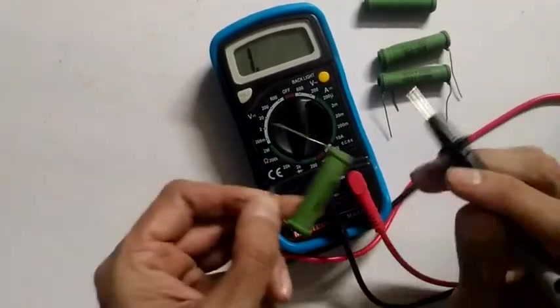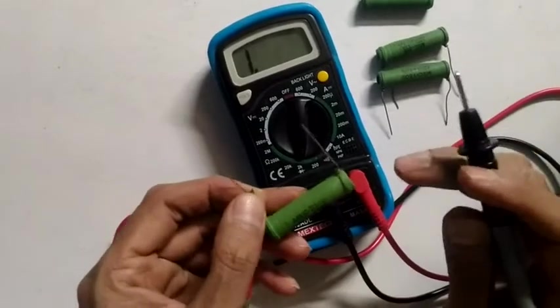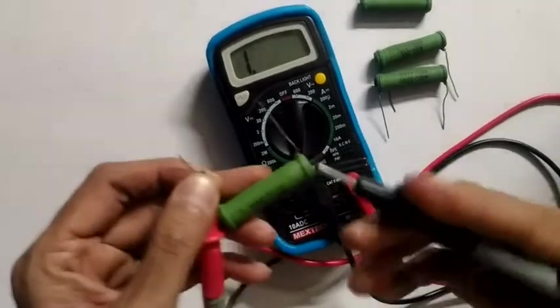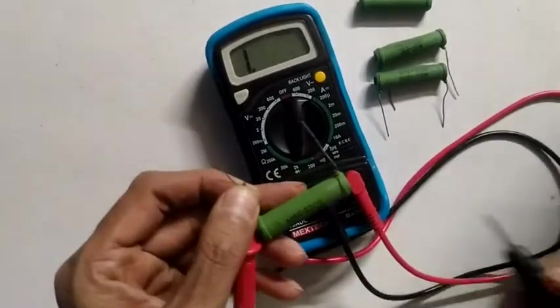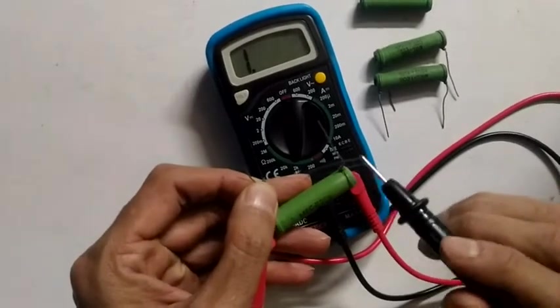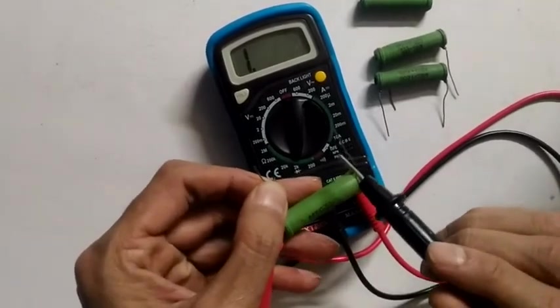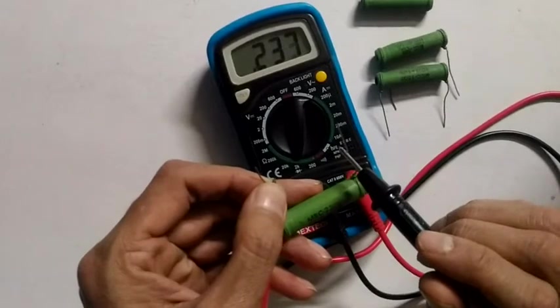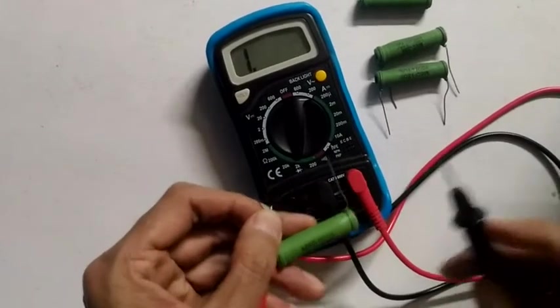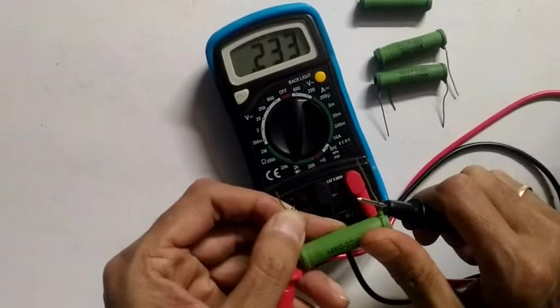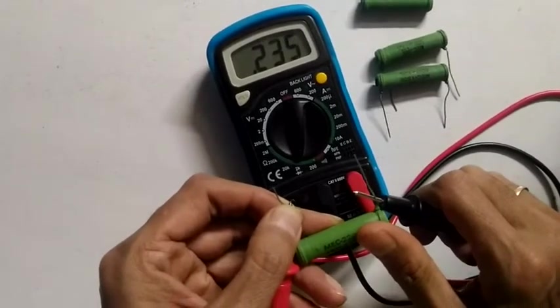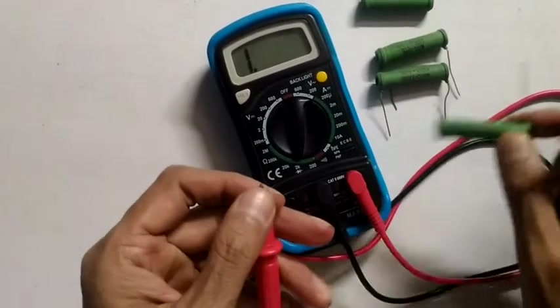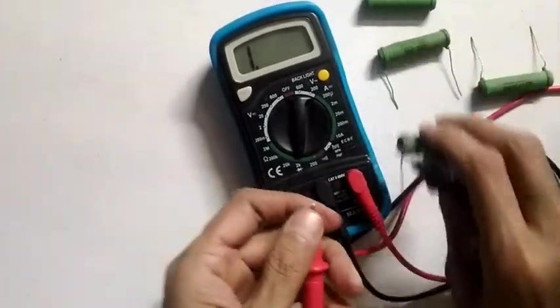One thing you need to remember while measuring resistors is you do not hold both sides like this. Don't do this - always leave one side. You don't want to mix up your body resistance with this. So here we go, this is showing around 239 ohms. Because it is in the 2k ohms range, it is showing 0.233. Fairly good enough. All these resistors have some tolerance, it says 10% tolerance, so it is fairly within the range.